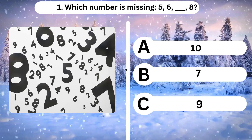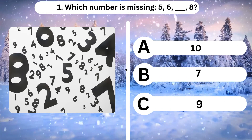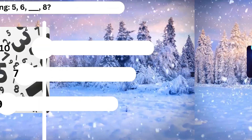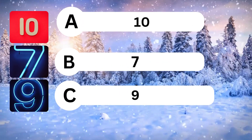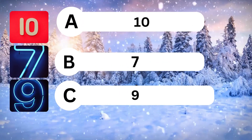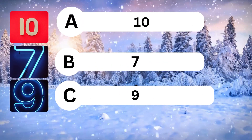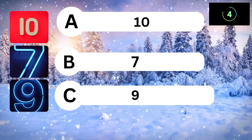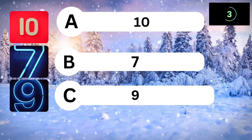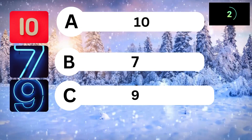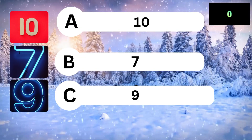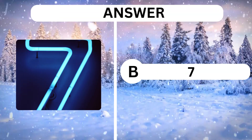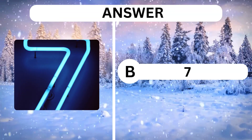Question 1. Which number is missing? 5, 6, 8? A, 10. B, 7. C, 9. Answer is B, 7.